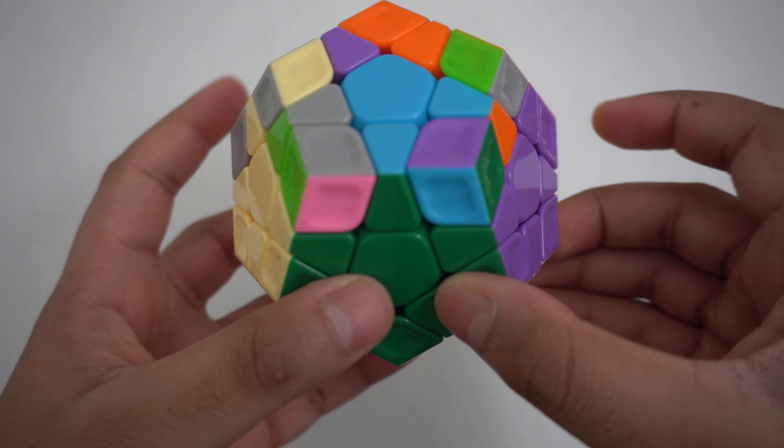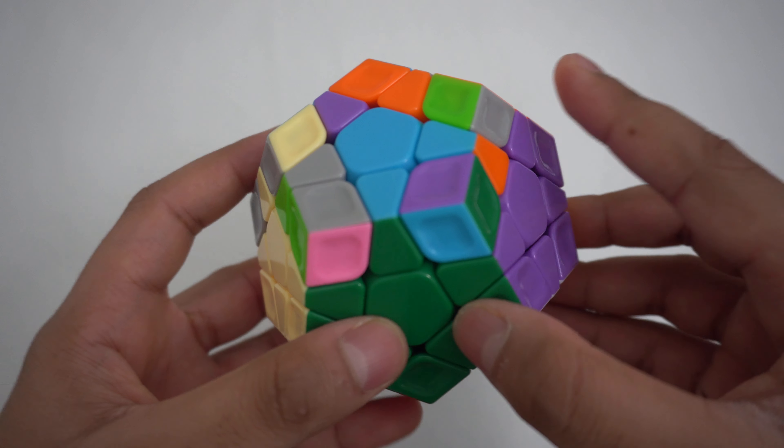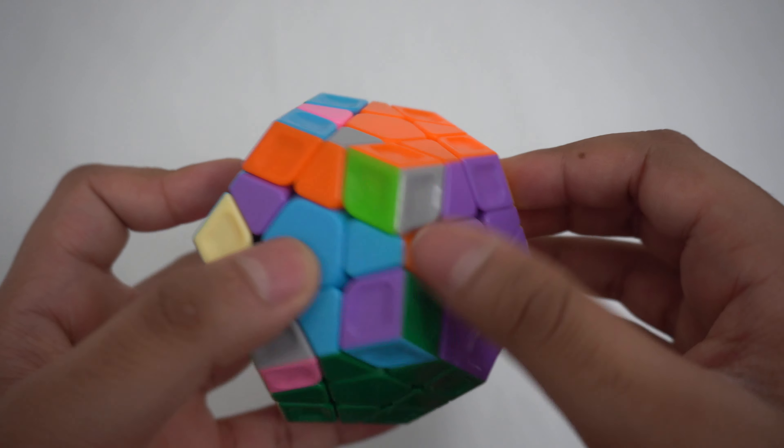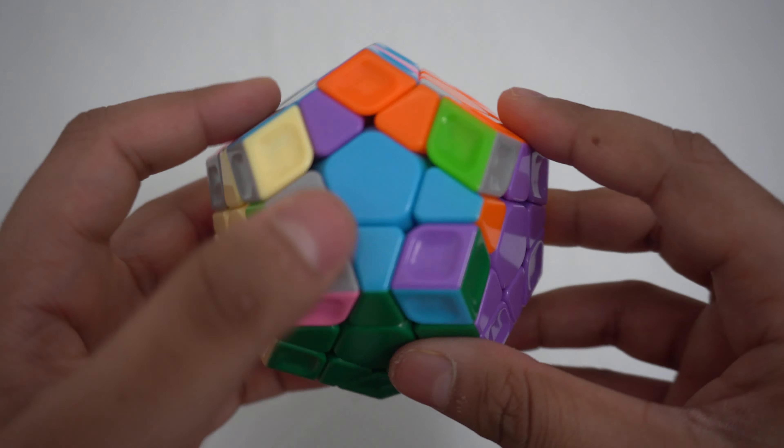When you're doing dark green F2L, there's a problem. When I'm trying to solve the green, light blue, and purple pair, it's a bit far away from the top so I can't make the pair.